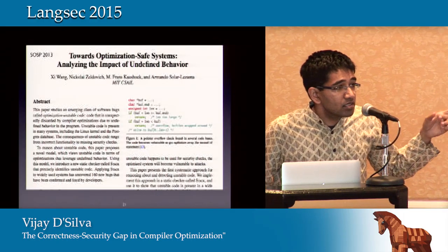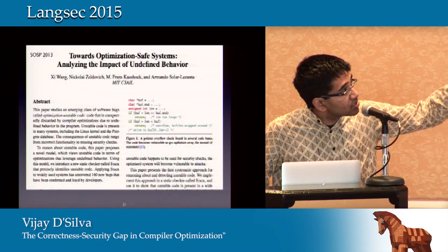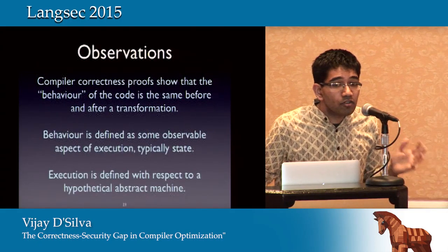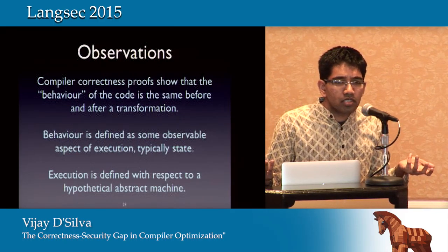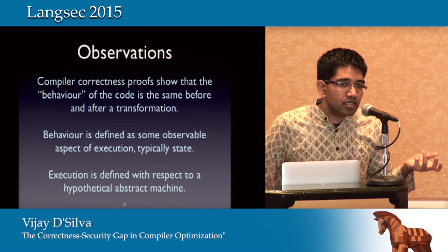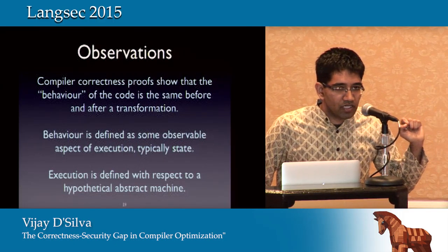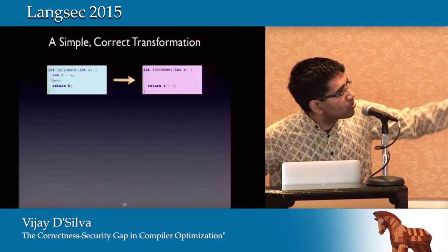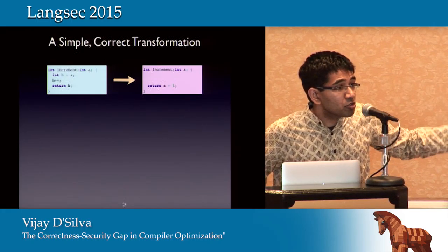In the specific case of undefinedness, there was a cool concurrent paper in 2013 that has a tool finding a lot of such bugs, taking that one specific point and studying it in great depth. But all of these examples are actually things that have formal correctness proofs. What we wanted to understand was: why can't I rely on that correctness proof to preserve the security guarantee I put in my source?